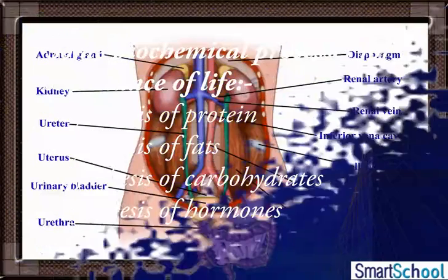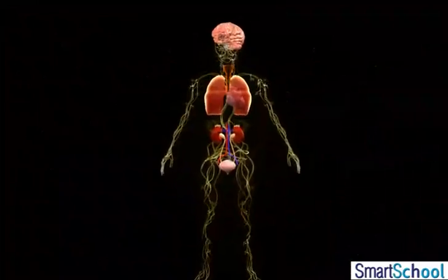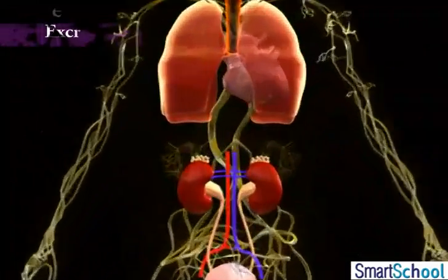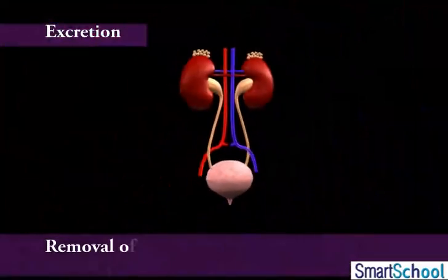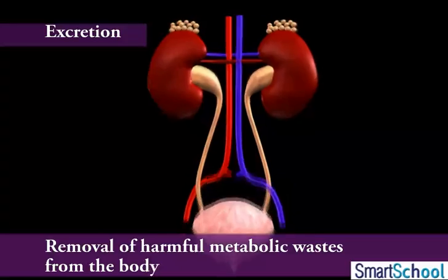These biochemical reactions of the many life processes lead to the production of harmful by-products which need to be removed out of the body. The biological process involved in the removal of these harmful metabolic wastes from the body is called excretion.